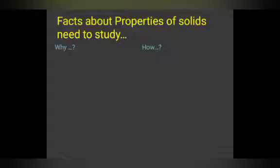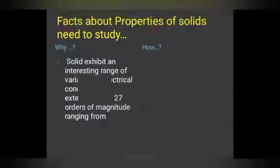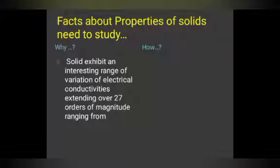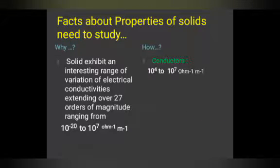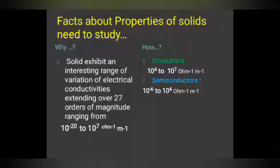In science, we must relate topics to the WH family — what, why, how, where, when. Why do we study properties of solids? Because solids exhibit an interesting range of variation of electrical conductivity, extending over 27 orders of magnitude, ranging from 10 raised to power minus 20 to 10 raised to power 7 ohm inverse meter inverse. For conductors the range is 10^4 to 10^7, for semiconductors 10^-6 to 10^4, and for insulators 10^-20 to 10^-10.